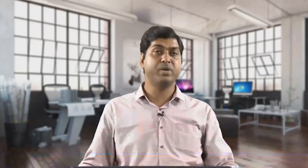Let us start with strength — basically the ability of a material to withstand loading applied on it. Strength determines how a material responds when load is applied, whether it is tension, compression, bending, or torsion. The ability to resist the applied load defines the strength of the material.